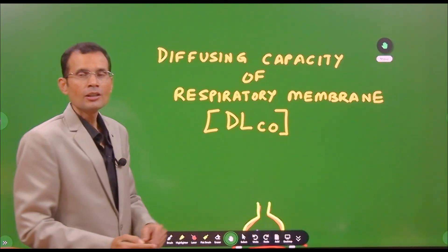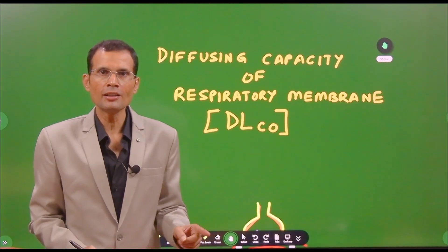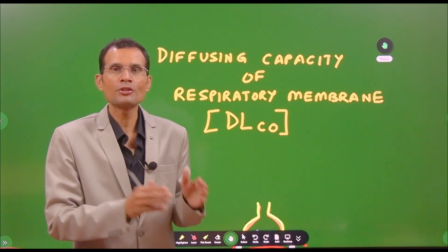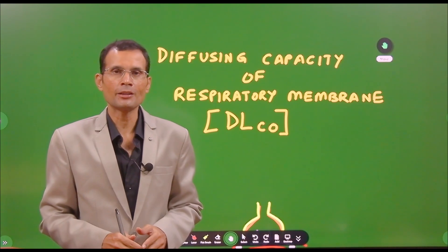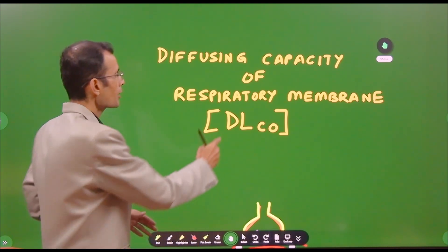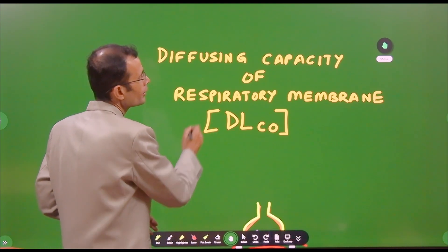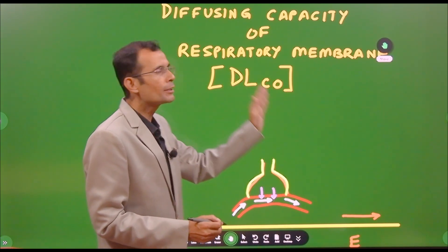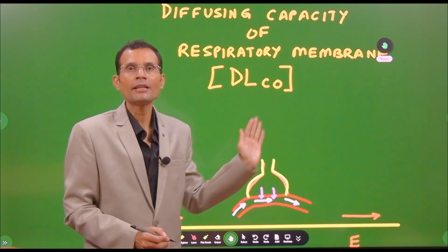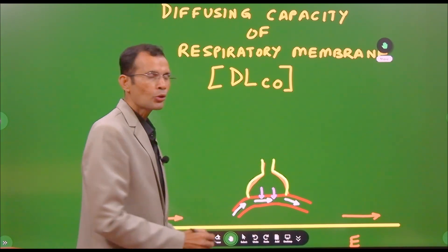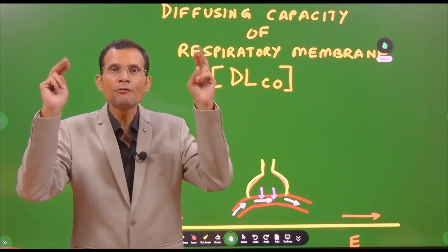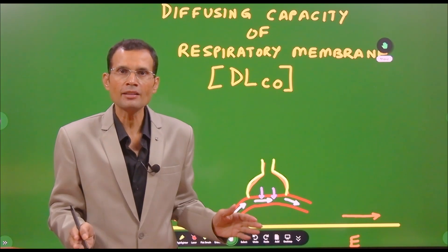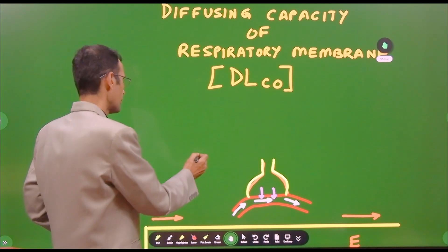We use carbon monoxide to measure the diffusing capacity of the respiratory membrane. This is called DLCO — diffusion-limited carbon monoxide. Carbon monoxide is said to be a diffusion-limited gas, and we will see why in a moment.